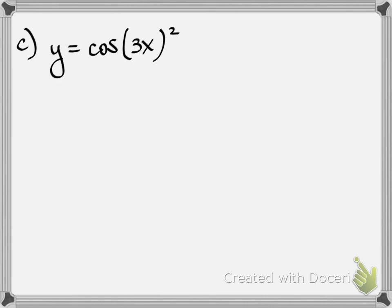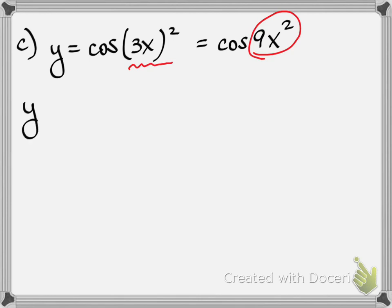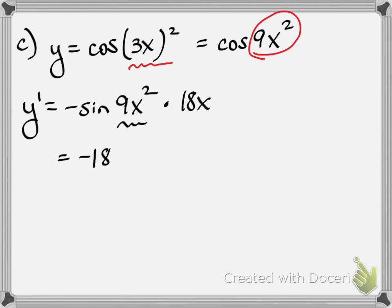Part c is cosine of 3x, the quantity squared. They moved the parentheses but totally changed the problem. The easier way is to work that out first: that's the same as cosine of 9x squared. So it is chain rule — cosine of something other than just x — so derivative of cosine is negative sine of that, times the derivative of the inside. The answer is negative 18x sine of 9x squared.